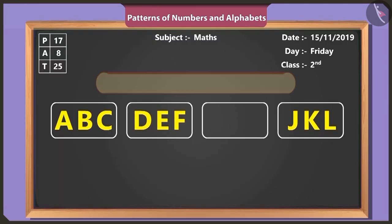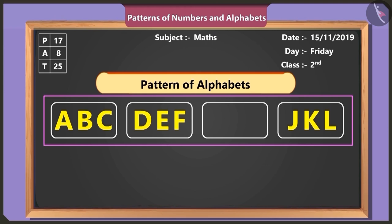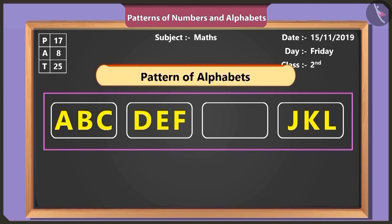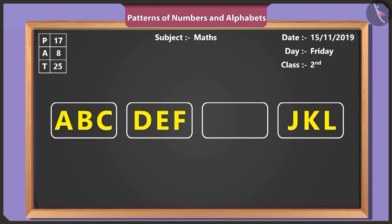Very good, Vinny. Now solve this puzzle made of alphabet pattern. This pattern is made of English alphabets A, B, C, D. And yes, each term of this pattern has three alphabets.